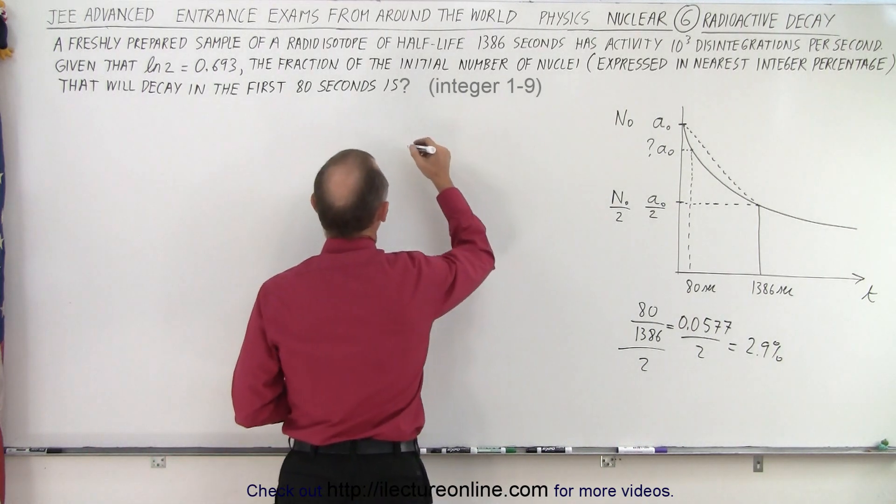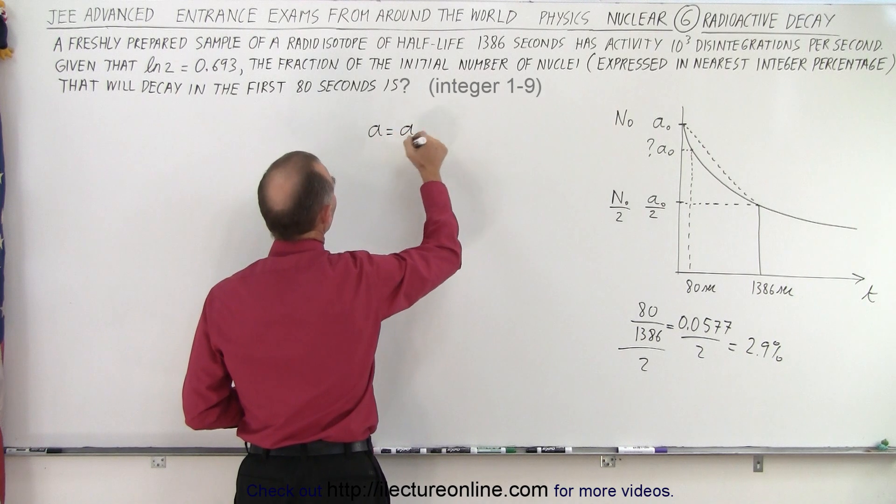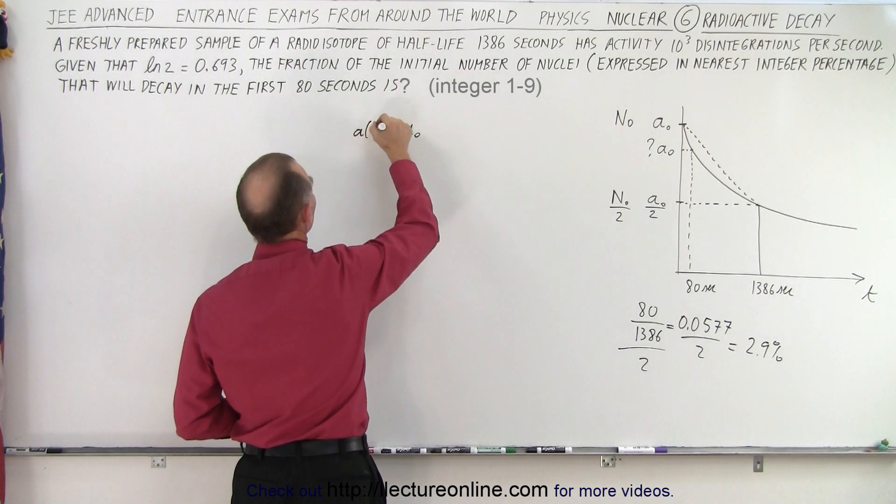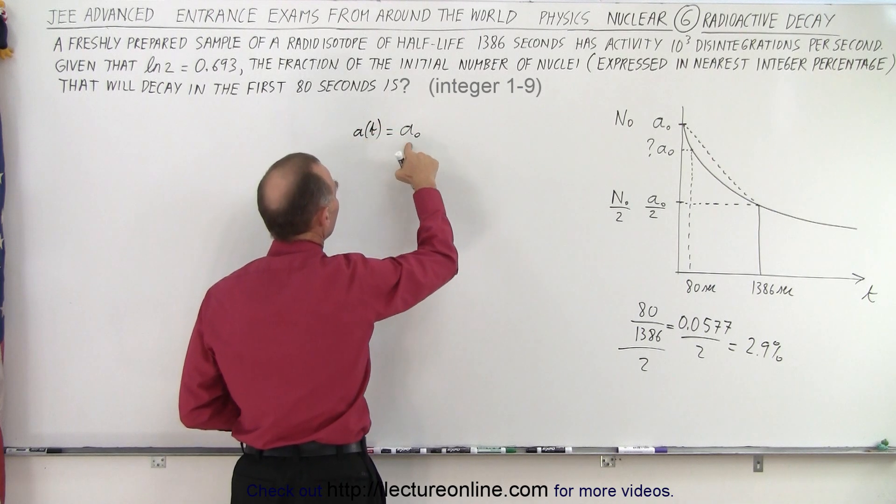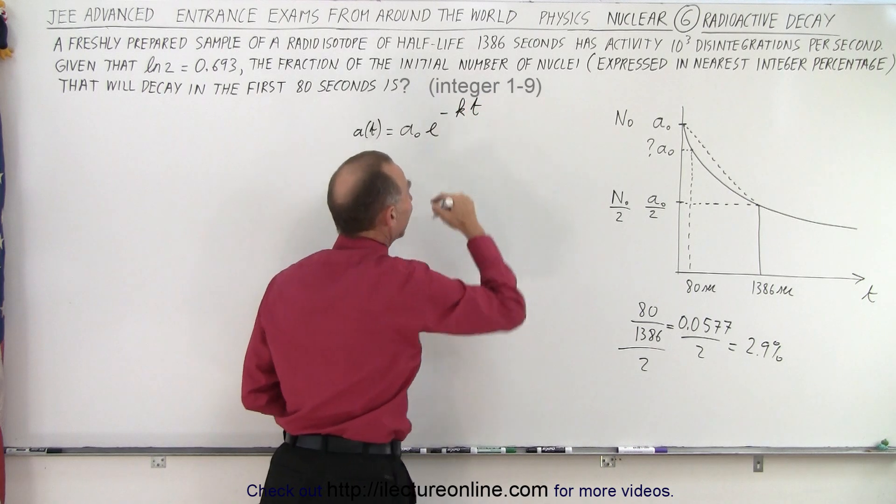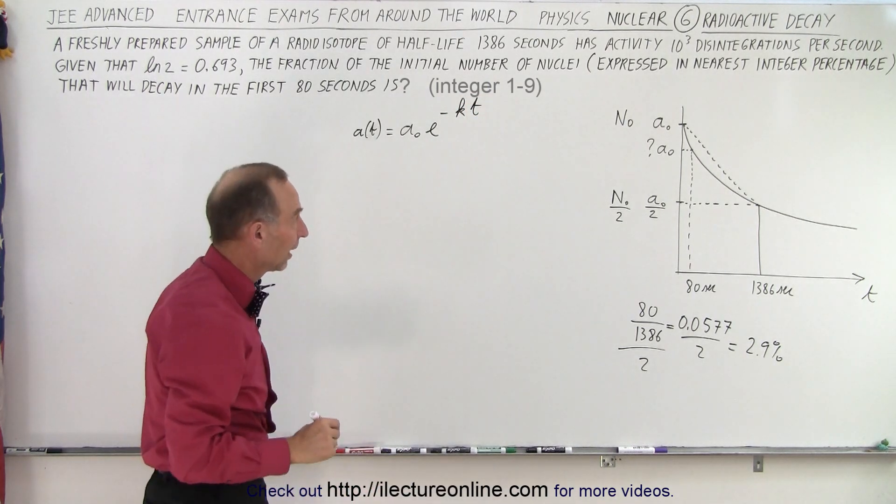But let's not guess, let's work it out. So first of all, we know that A is equal to A sub 0—and maybe that's a function of time, so let me write it like this: A is a function of time, the activity is a function of time, is equal to the original activity times e to the minus kt, where k is the decay constant.